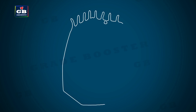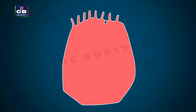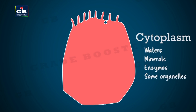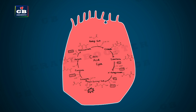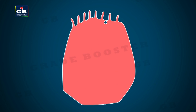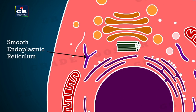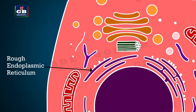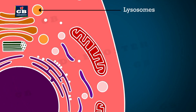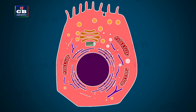A cell is covered by a cell membrane or plasma membrane. The space inside the plasma membrane is filled by a semi-transparent, jelly-like material called cytoplasm. Cytoplasm consists of water, minerals, enzymes, and some organelles. It is the place where many biochemical reactions take place. There are many organelles floating in the cytoplasm, including smooth endoplasmic reticulum, rough endoplasmic reticulum, Golgi apparatus, lysosomes, mitochondria, and vacuoles.